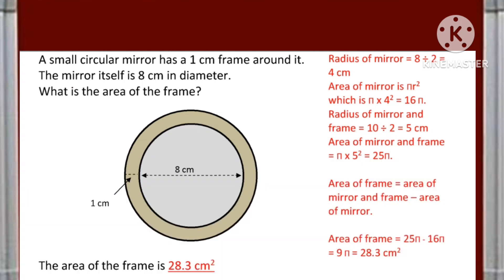Here is the example of an important sum a small circular mirror has a 1 centimeter frame around it the mirror itself is 8 centimeter in diameter what is the area of the frame. First of all from the diameter of the mirror we have to calculate the radius of the mirror that will be 8 divided by 2 that is 4 centimeter from that we have to calculate the area of the mirror that will be pi 4 square that is 16 pi.